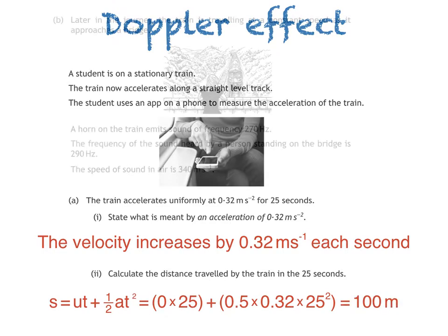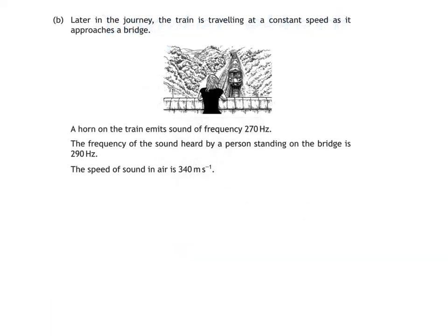Here's part B of the question. Later in the journey, the train is travelling at a constant speed as it approaches a bridge. A horn on the train emits sound of frequency 270 Hz. The frequency of the sound heard by a person standing on the bridge is 290 Hz. The speed of sound in air is 340 m per second.